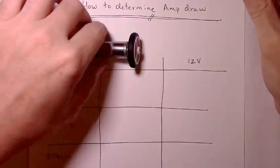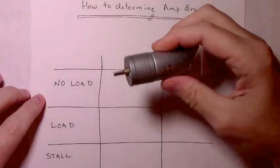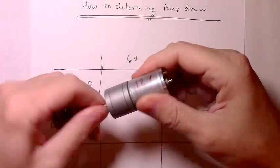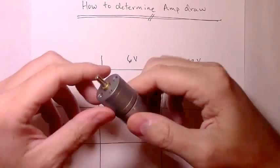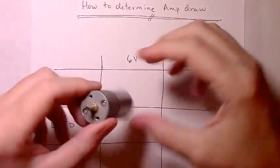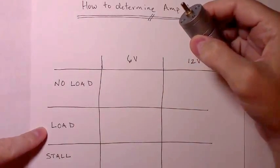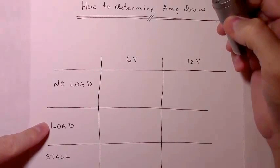We'll look at how to determine the amp draw at the no load state where the motor is just spinning outside with no wheels or pulleys or anything attached to it, just basically unloaded. And how to determine the amp draw when it's under a load.